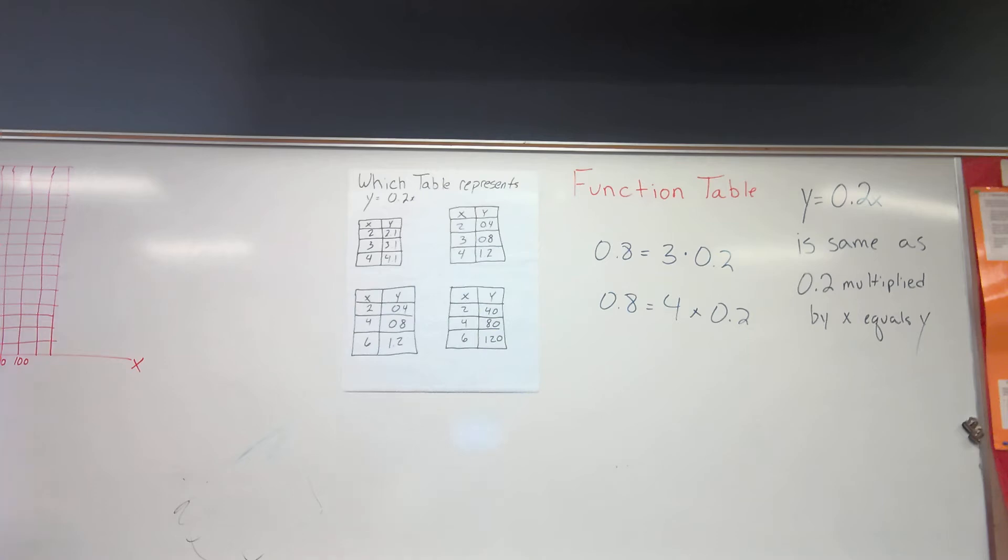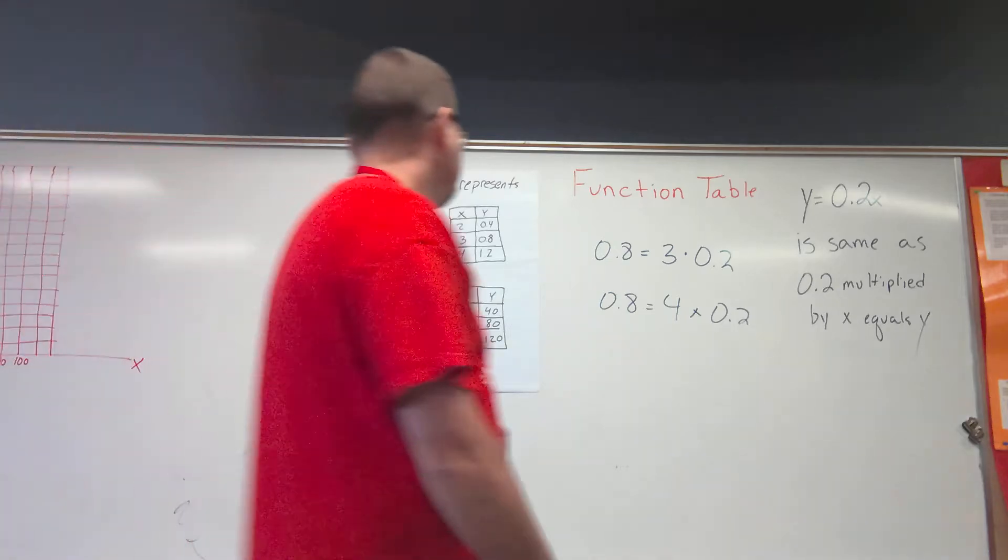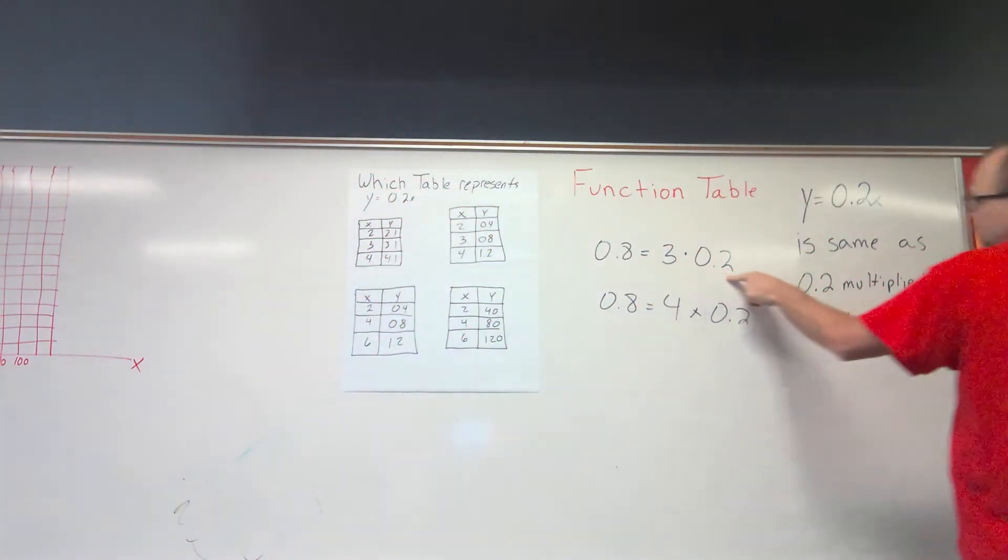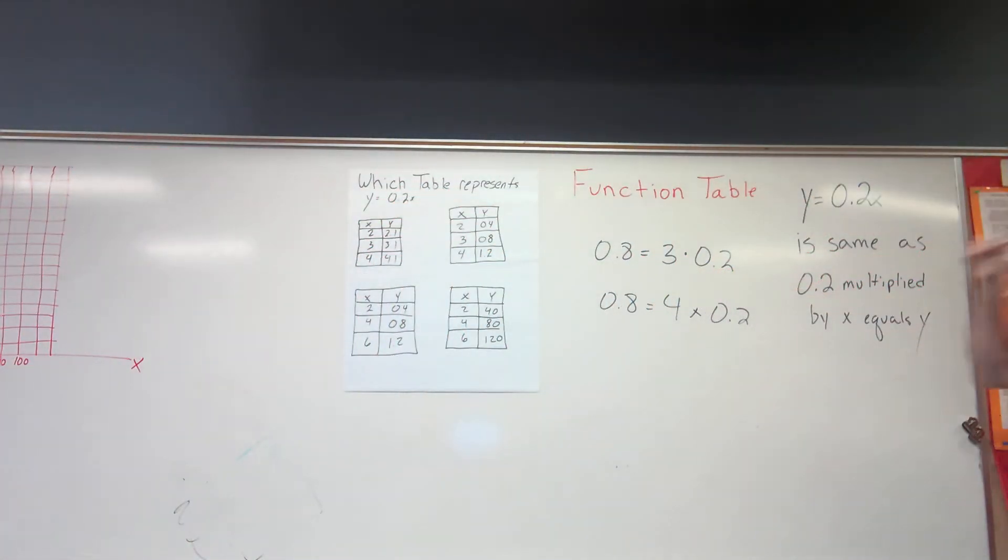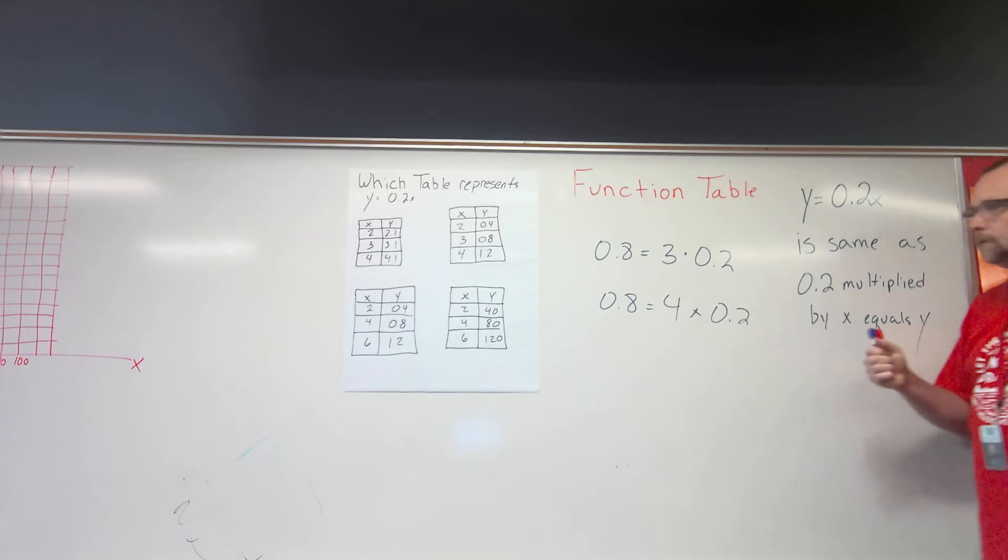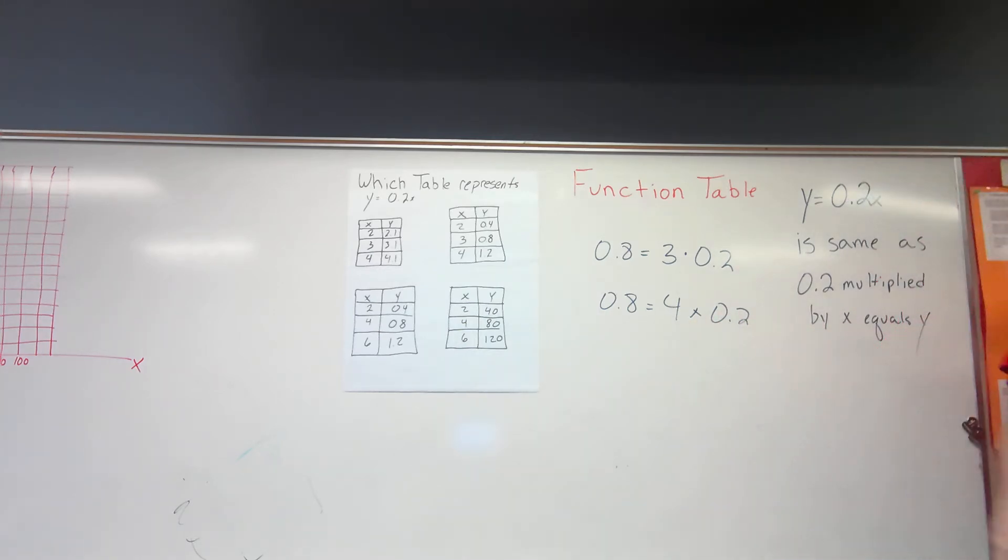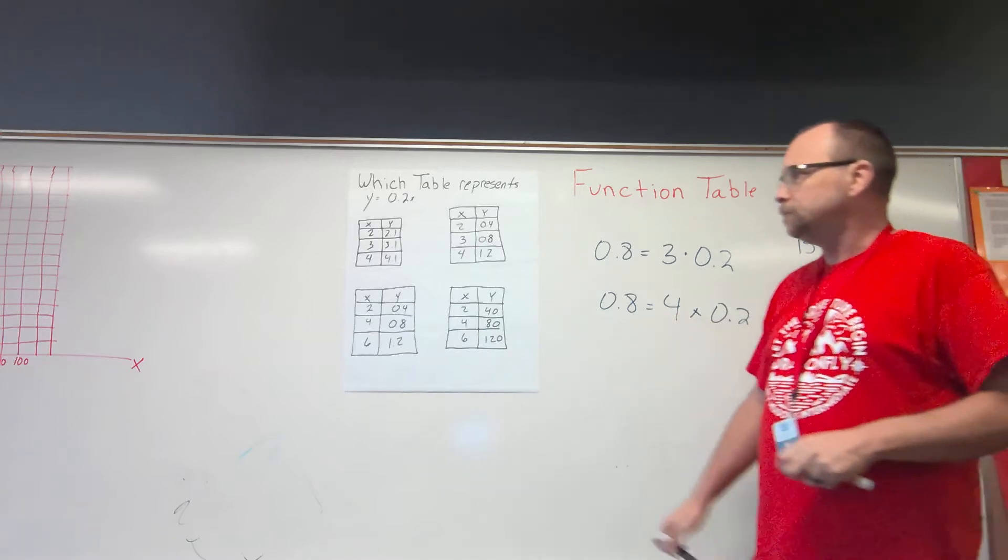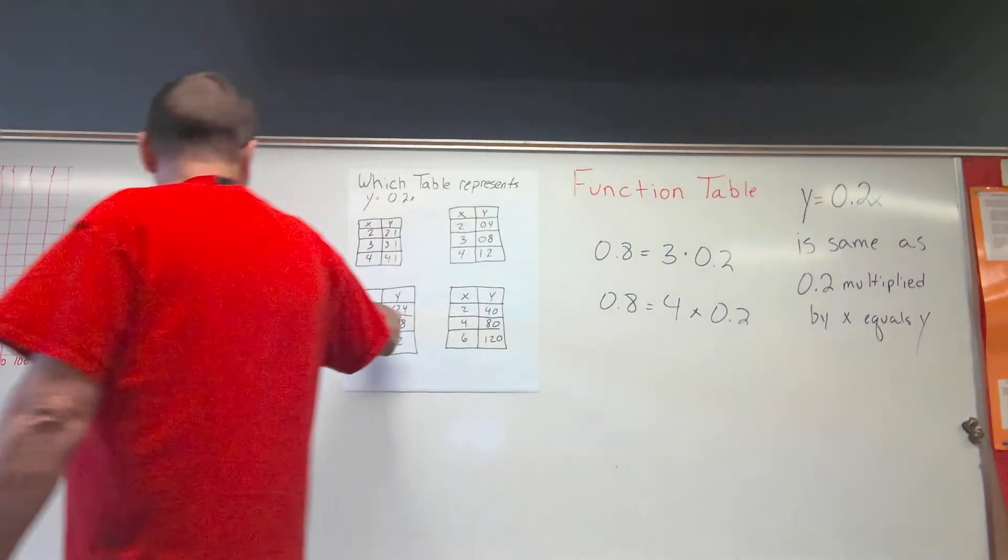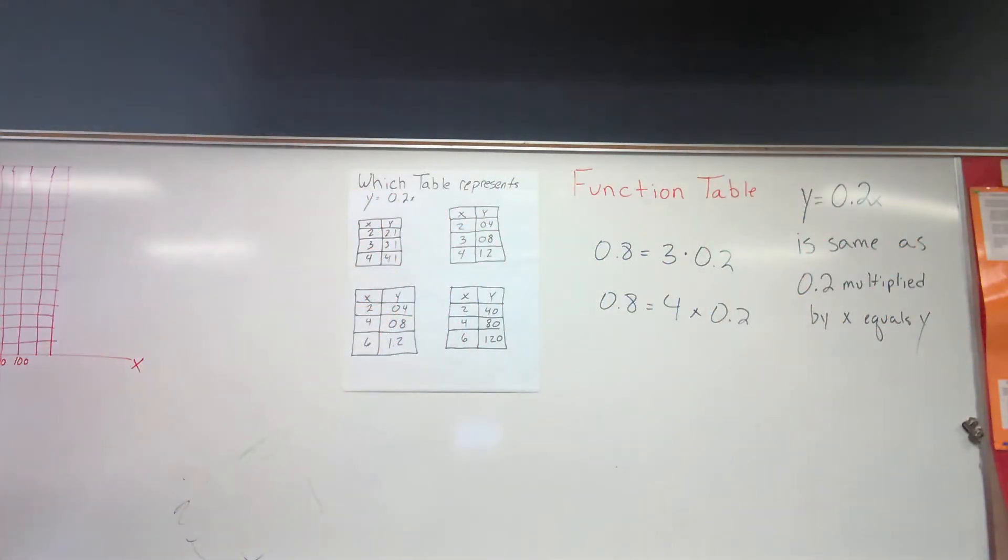So if we look at this and we ask my friend Silas: does three times two tenths equal eight tenths, or four times two tenths equal eight tenths? Four. Because four times two is eight, one number behind the decimal point, so it's eight tenths. So that would mean this answer choice would be my answer.